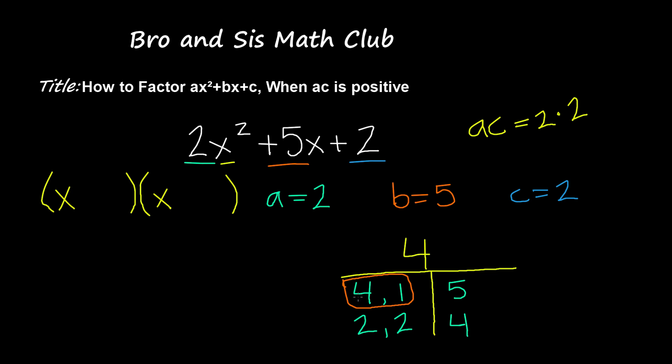So what I'm going to do now is put x plus 4 and x plus 1, right? And since they're positive, it doesn't matter which order I put them in. I can put it as x plus 1 and then x plus 4 or x plus 4 and x plus 1.